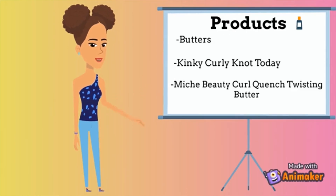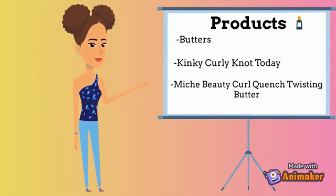For high porosity hair products, heavy products are needed to fill the gaps in the cuticle to retain moisture. First on the list: mango butter and shea butter — heavy and moisturizing, perfect for high porosity hair and can substitute for oils. Second: Miche Beauty Quench Twisting Butter, which comes highly recommended and may be worth a try. Third: jojoba oil, which is amazing for any hair porosity and works perfectly as a sealant because it's the most similar to the oil our hair naturally produces.